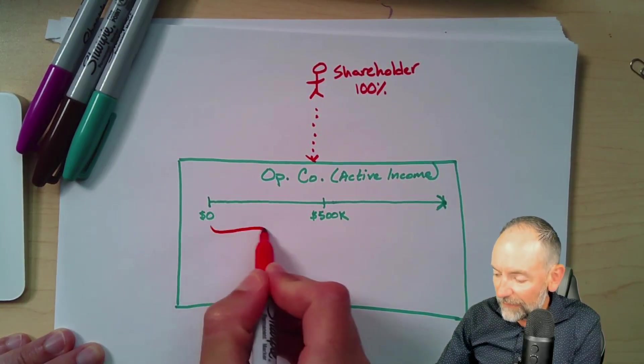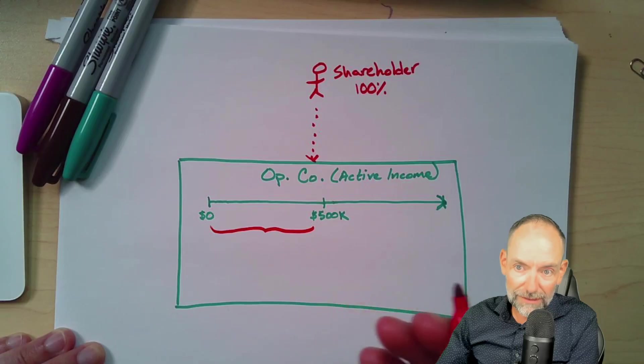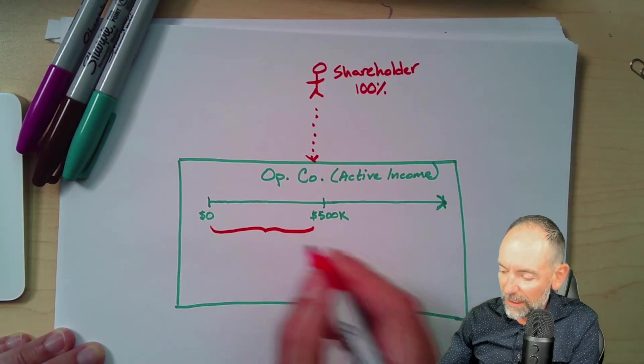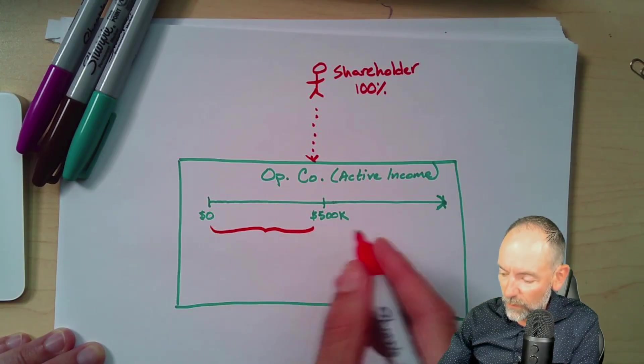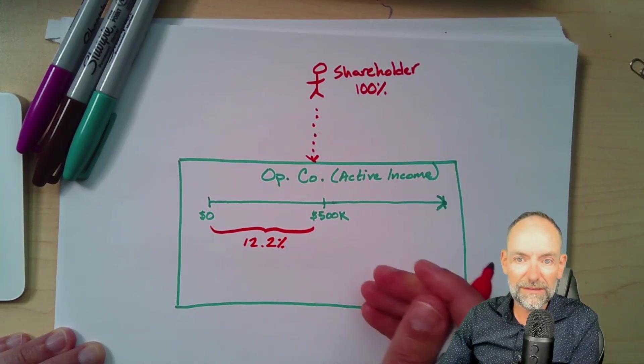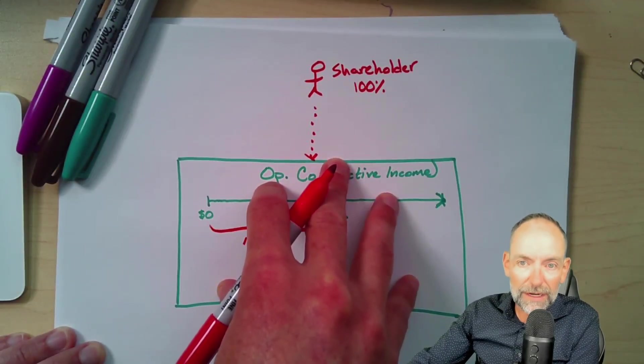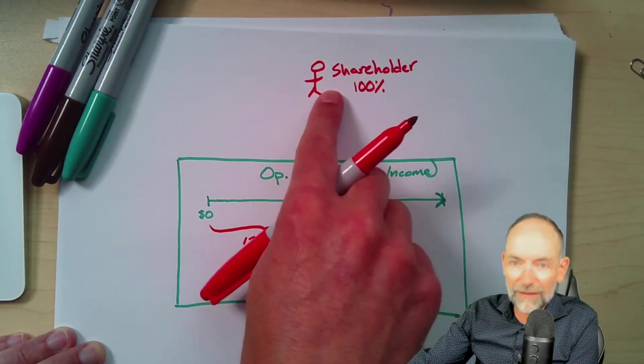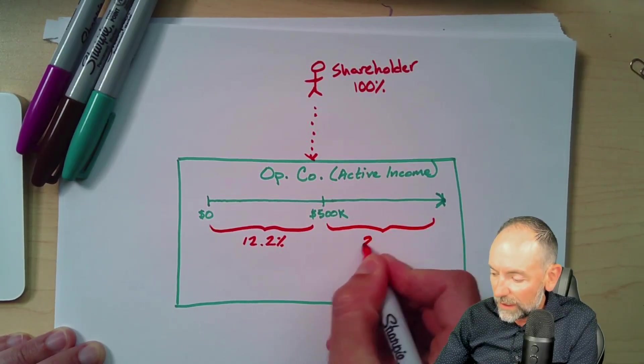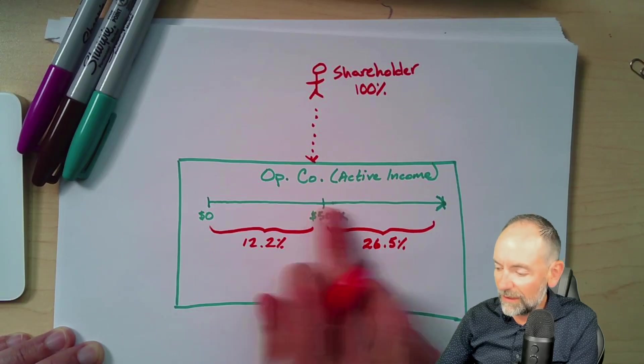On that first $500,000, we get a small business deduction, which makes here in Ontario, I'll talk in Ontario, everywhere else is a little bit cheaper. So Ontario's the highest currently anyway, as I record this, but you're gonna get charged 12.2%. So that's not bad. But the problem is, that's money charged to the company on net operating income, and you still don't have it in your personal pocket. So that's a problem. Anything above that is going to be 26.5%, I believe as recording this video here. So anything above that.